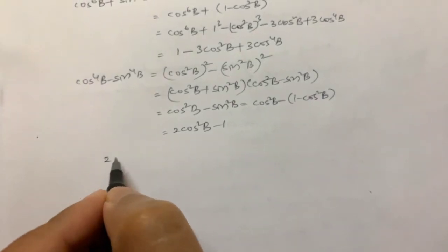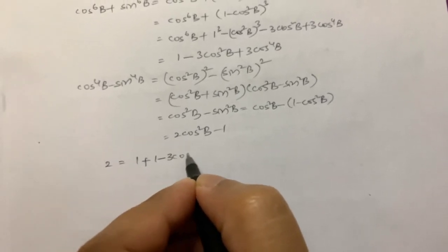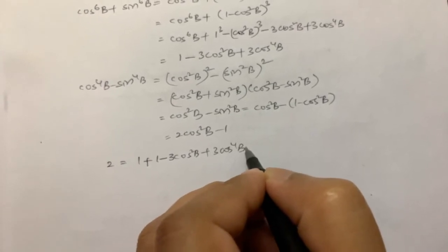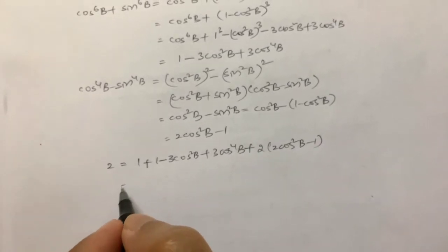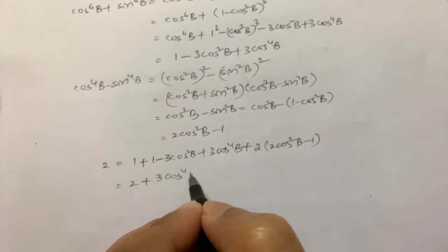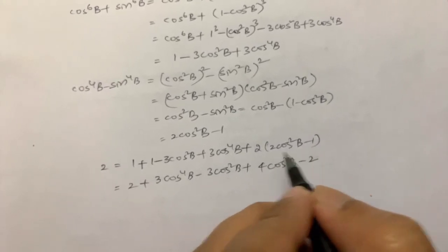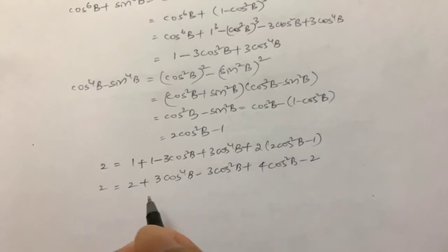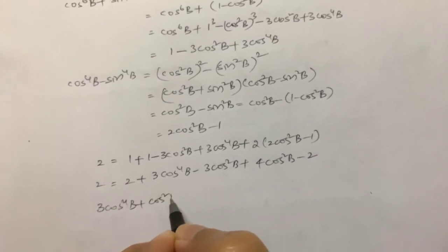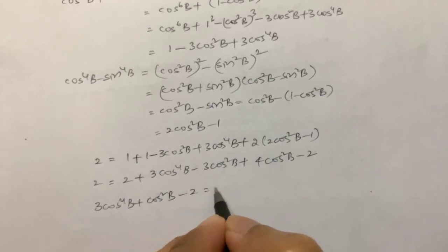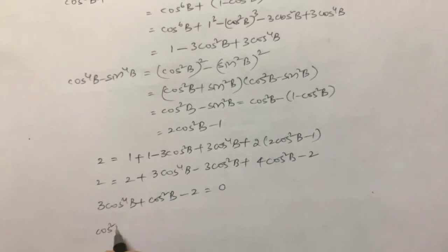Substituting everything back into the combined equation: 2 = 1 + (1 - 3 cos² B + 3 cos⁴ B) + 2(2 cos² B - 1), which simplifies to 2 = 2 + 3 cos⁴ B - 3 cos² B + 4 cos² B - 2. The 2s cancel. Let t = cos² B, so we get 3t² + t - 2 = 0.